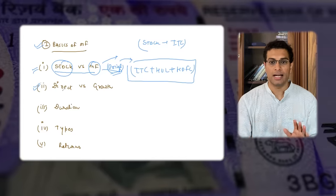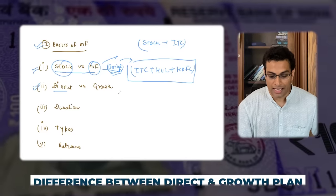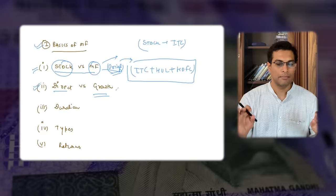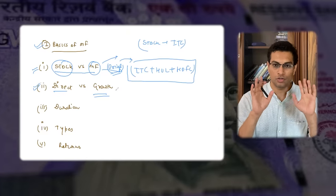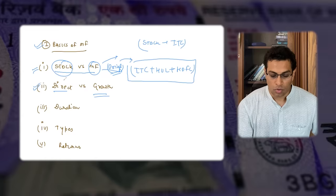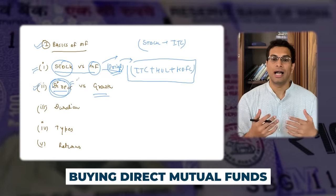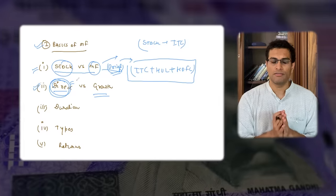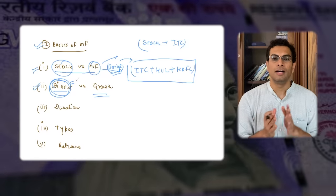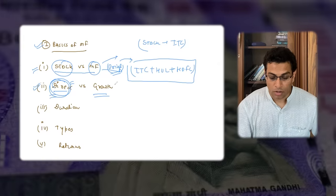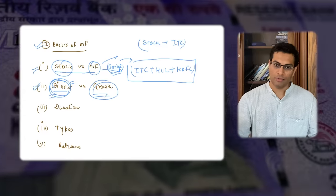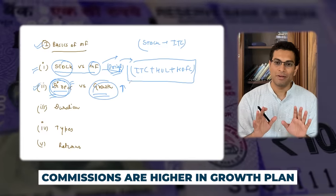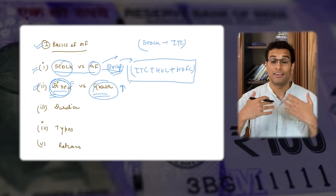The second key point you need to understand is the difference between a direct and a growth plan. Please go download any mutual fund buying app and buy the direct plan — that is the categorization you need. For example, if you are looking at SBI Blue Chip Mutual Fund, buy the direct plan, not the growth plan. Why? Because there is no difference between the two except that in the growth plan, commissions are higher. This is a very important point — I have helped you save some money.